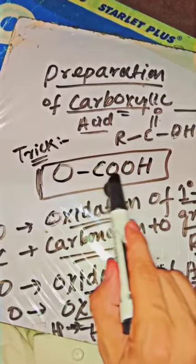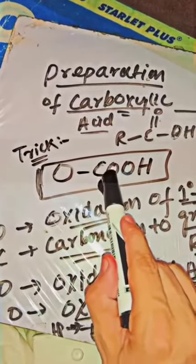Assalamu alaikum. Now going to preparation of carboxylic acid. The general formula for carboxylic acid is written here - this is the alkyl group R, and this is COOH.